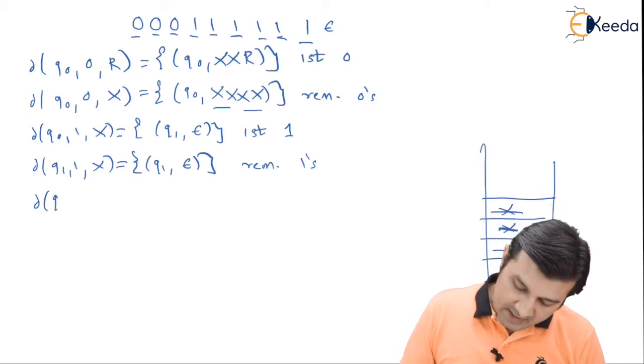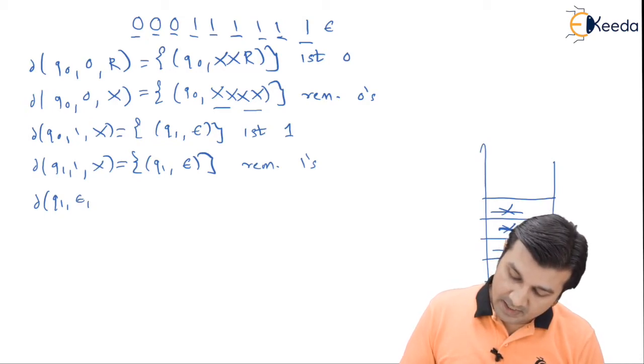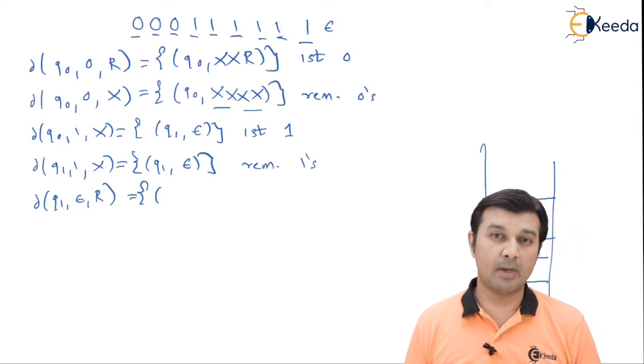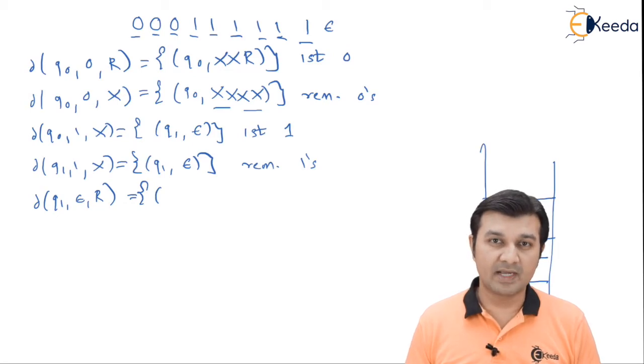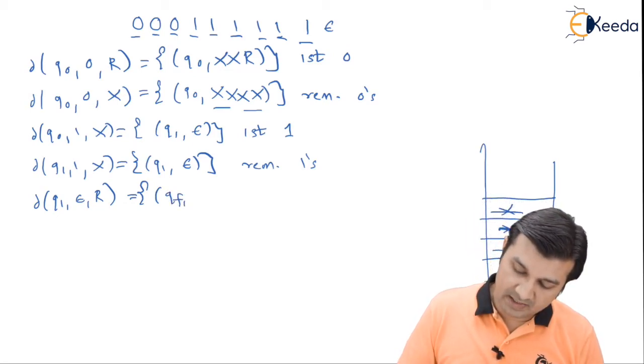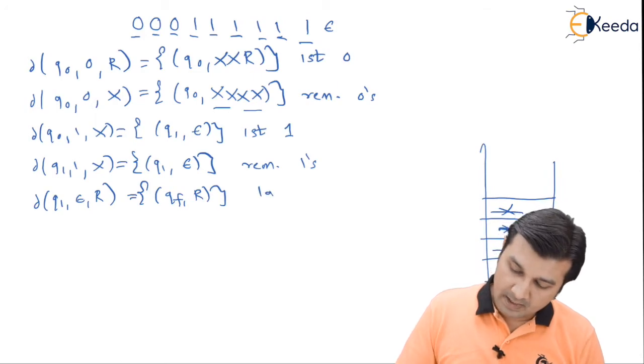Now, when I say I am in state q1, input symbol is epsilon, stack top is R, if that is the condition, I can say my pushing and popping has been done perfectly. I can now go to the final state. I say go to the final state and do not touch anything on the stack, therefore it remains R over there, and this I call it as my last.